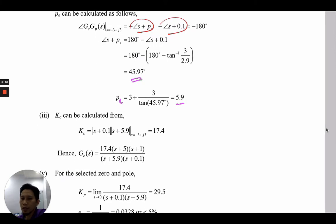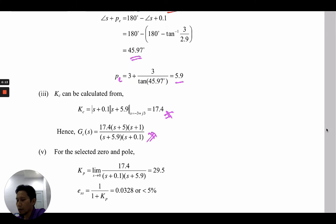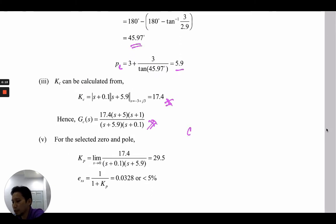The next step is we calculate KC from the resultant controller GC multiplied by GP. We have |s + 0.1| multiplied by the absolute value of |s + 5.9| at s equals negative 3 plus j3, and that results in 17.4 of gain. This is the resultant controller. We can then find G which equals GP multiplied by GC, and we get 17.4 over (s + 0.1)(s + 5.9).